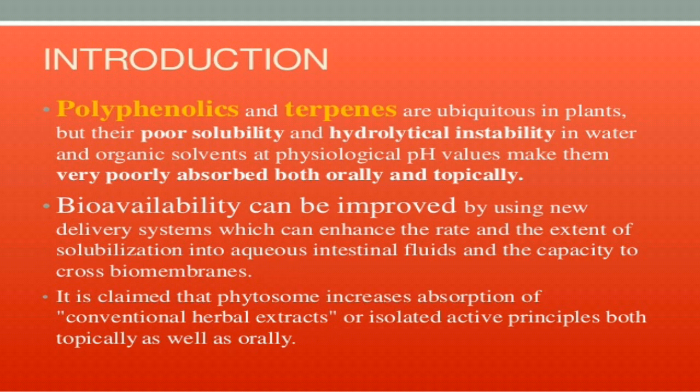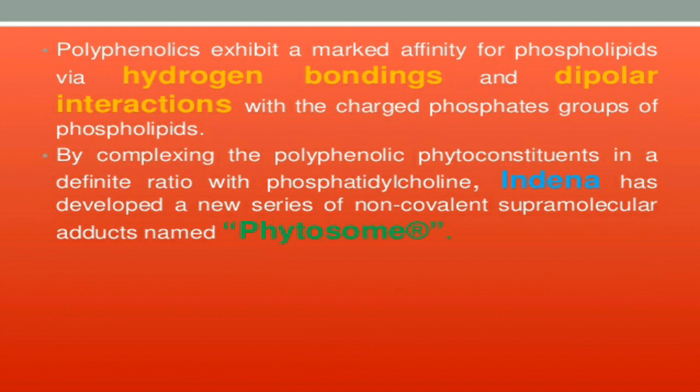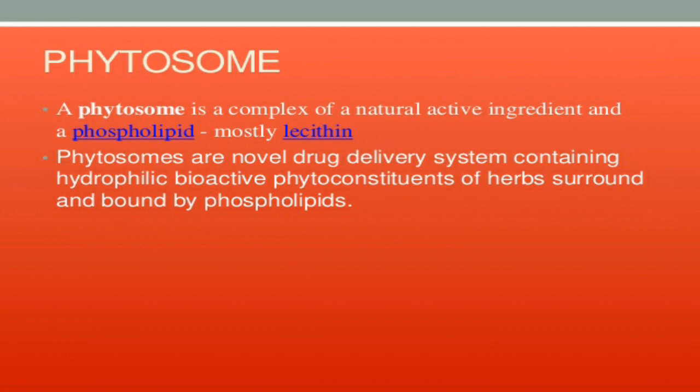Why are such formulations needed in the recent market as compared to conventional or traditional dosage forms? Because many phytoconstituents have very low bioavailability due to less absorption — like polyphenolics and terpenes, which are already available in plants in major proportions, having antioxidant and related properties. They have less solubility in body fluids and cannot be easily absorbed. This bioavailability can be increased by formation of phytosomes. The main mechanism is that polyphenolics exhibit affinity with phospholipids, so we can attach particular herbal extracts along with phospholipids like phosphatidylcholines by hydrogen bonding or dipolar interactions, and these complexes increase the absorption and bioavailability of the particular drug or extract.